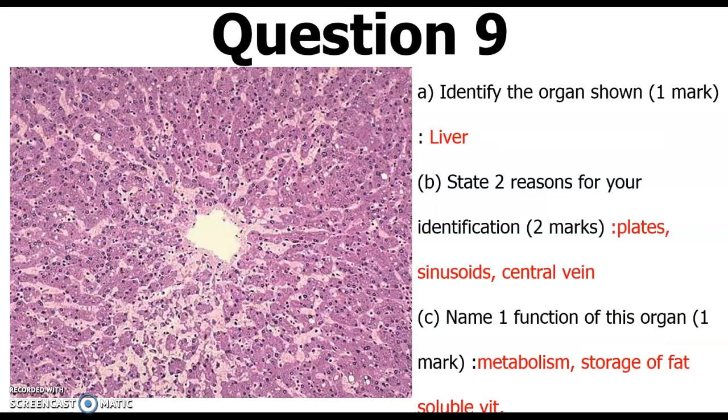What you can appreciate here is the liver — the central vein, the sinusoid, and the hepatic ligament system.